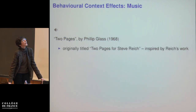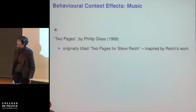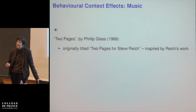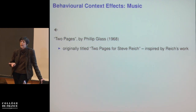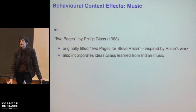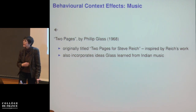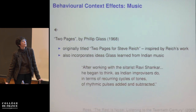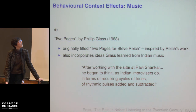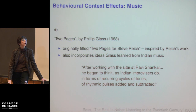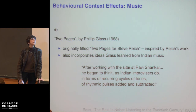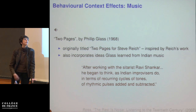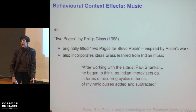This piece was originally titled 'Two Pages for Steve Reich' because it was so strongly influenced by a particular piece Reich wrote called 'Piano Phase.' It was also strongly influenced by Philip Glass's experience as an adult learning about Indian music. After working with the sitarist Ravi Shankar, Glass began to think, as Indian improvisers do, in terms of recurring cycles of tones and rhythmic pulses added and subtracted.